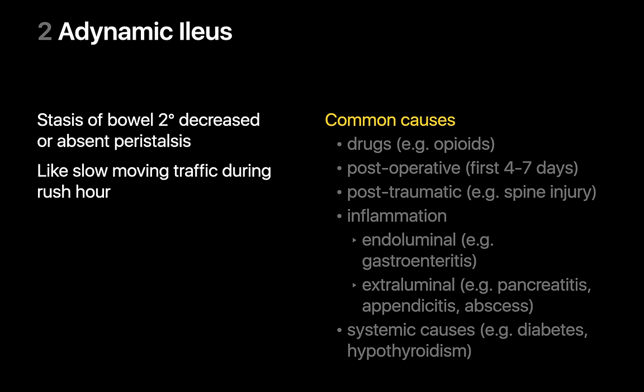Adynamic ileus has a different etiology from mechanical bowel obstruction and occurs when peristalsis in the GI tract has slowed down or stopped. Reasons why peristalsis is arrested may include narcotics, recent manipulation of the GI tract, trauma, inflammation of or near the GI tract, and sometimes systemic causes. Although the x-ray appearance of adynamic ileus may resemble mechanical bowel obstruction at first glance, adynamic ileus can often be distinguished since there shouldn't be a focal obstruction point with downstream GI tract clearance and collapse.